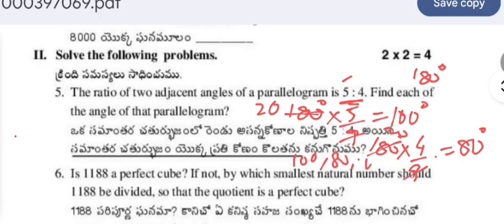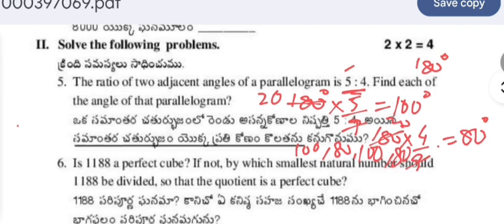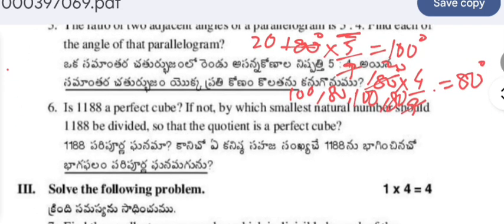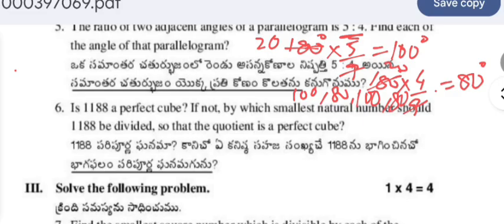Is 1188 a perfect cube? If not, by which smallest natural number should 1188 be divided so that the quotient is a perfect cube? To find out, divide 1188 by its prime factors. Starting with 2: 1188 is divisible by 2.